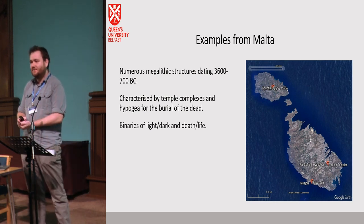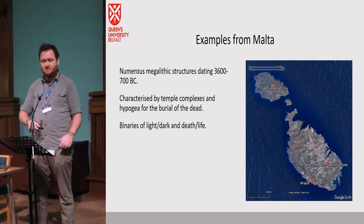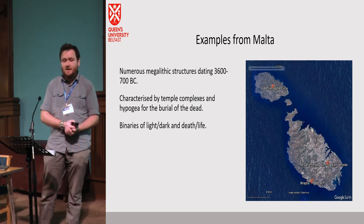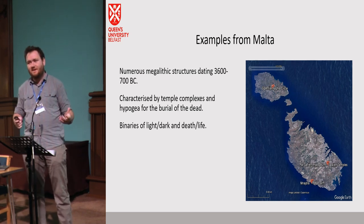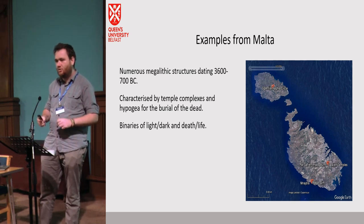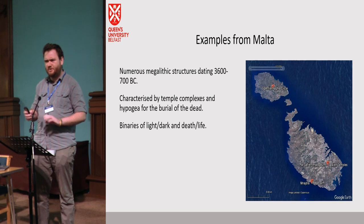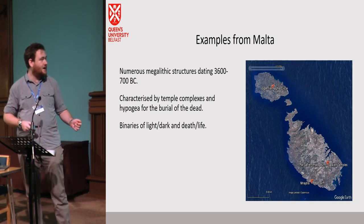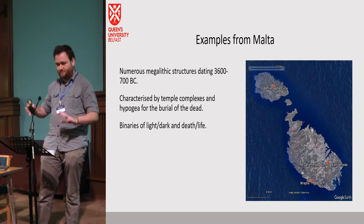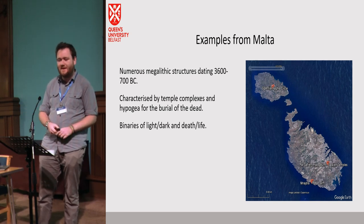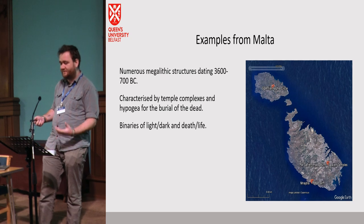For today, I'm going to be looking at a few examples from Neolithic Malta. Malta is a series of islands in the Mediterranean — fairly small but characterized by a very important historical past. In the Neolithic, there was a group of people who created enormous megalithic structures from around 3600 to 2400 BC. These big structures usually take two forms: they can either be above-ground temples made of enormous stones — think Stonehenge but a lot more complex — or they can be underground hypogea, which were generally used for the burial of the dead.